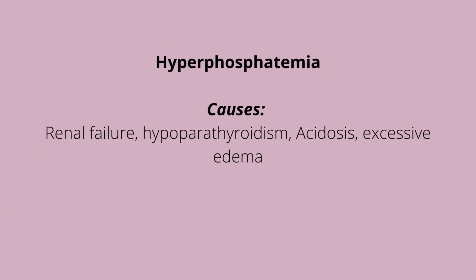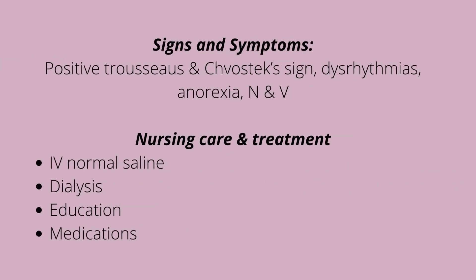Hyperphosphatemia means high levels of phosphorus. Causes include chemotherapy, acidosis, excessive enemas, high intake of phosphorus, hypoparathyroidism, acute pancreatitis, and renal failure. Symptoms include positive Trousseau's sign, tetany, cramps, paresthesia, dysrhythmias, hyperreflexia, anorexia — which means lack of appetite — nausea and vomiting, and soft tissue calcification. Treatment includes IV normal saline, dialysis, dietary management and education, as well as medications like aluminum hydroxide, diuretics, and vitamin D.